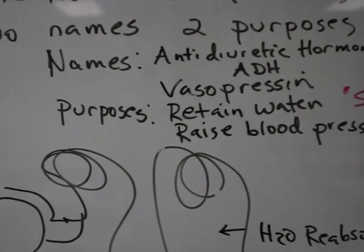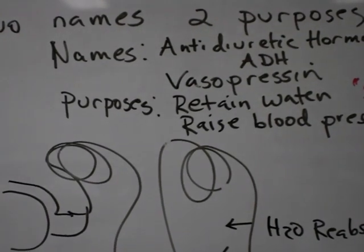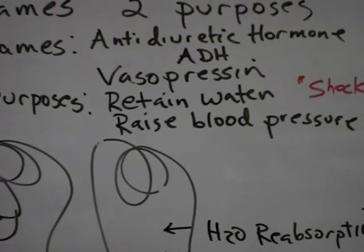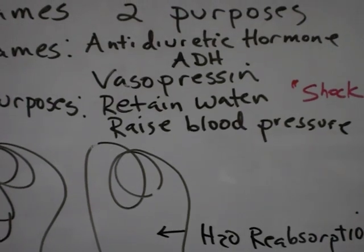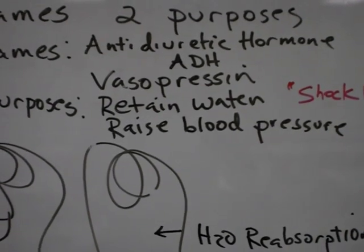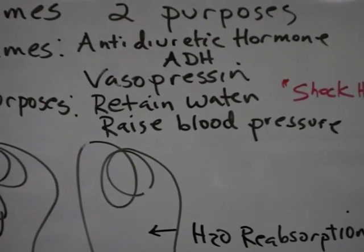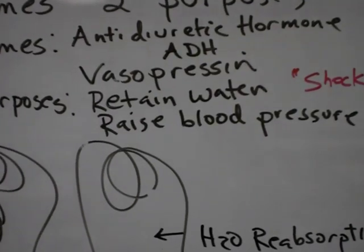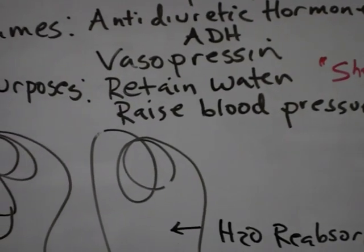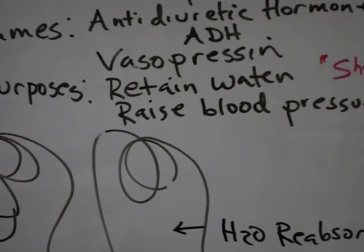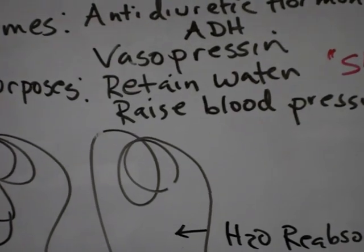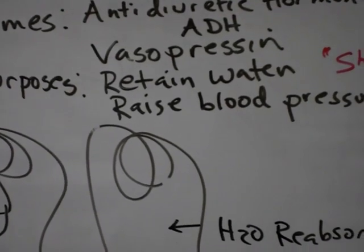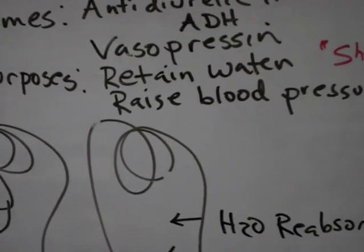What are the two purposes? The purposes are really the keys in the name. The first is to retain water — that's antidiuretic hormone. The purpose of antidiuretic hormone is to retain water. Think of it this way: your body would urinate all its fluid if it wasn't for antidiuretic hormone.